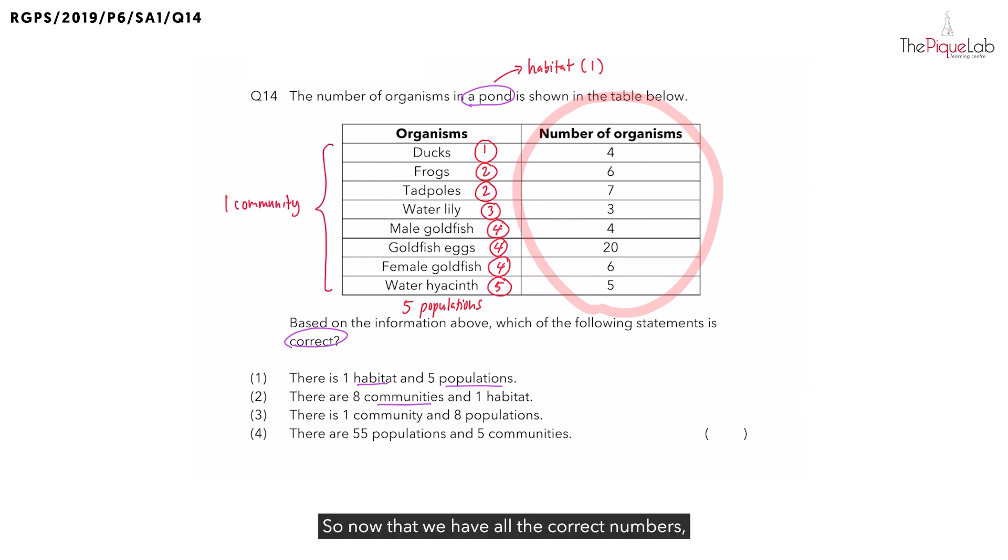So, now that we have all the correct numbers, let's check our statements. Statement one. There is one habitat. That's correct. That's the pond. And we have five populations. That is also correct. We know our answer is number one, but let's just check the other options to be sure.